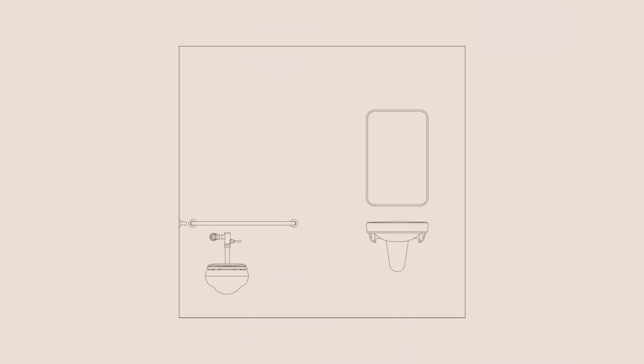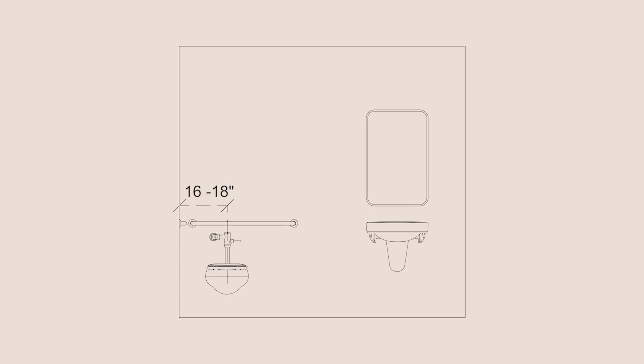Here's an elevation of an accessible water closet. As we know from the last video, a water closet is the technical term for a toilet. Water closets must be positioned 16 to 18 inches away from the sidewall, measured to the centerline of the water closet. The seat itself must be mounted between 17 and 19 inches from the floor — that's to the top of the toilet seat. A quick note that the ADA code recommends a wall-hung water closet, so if you encounter a question on the NCIDQ exam asking you to select the best fixture for an ADA restroom, you would want to select a wall-hung fixture.